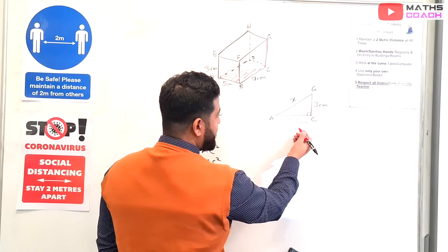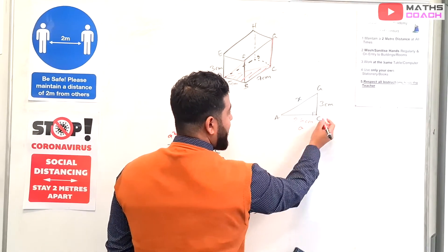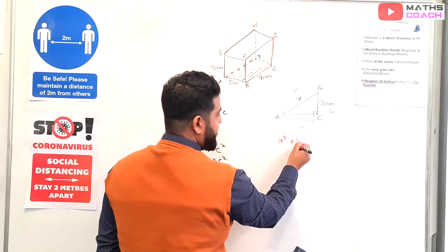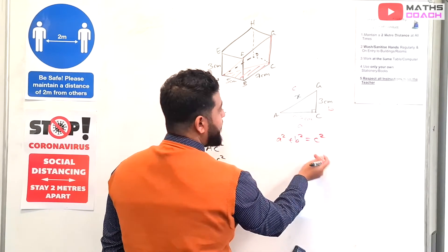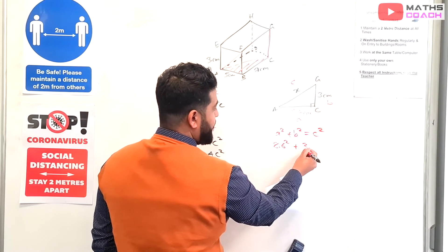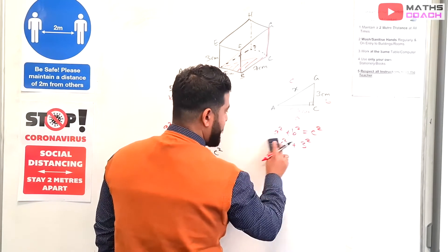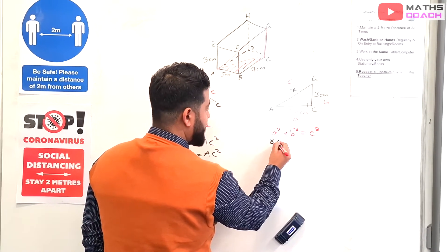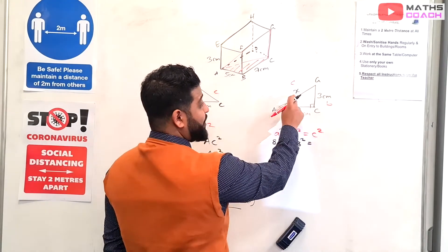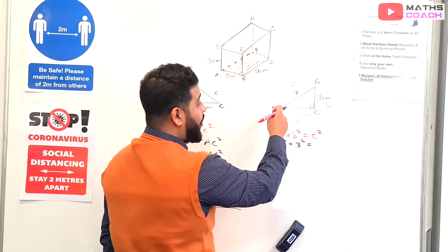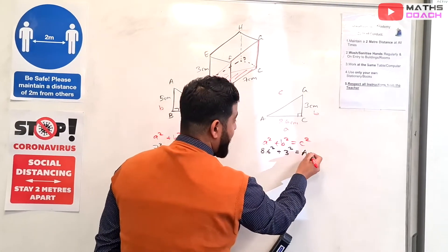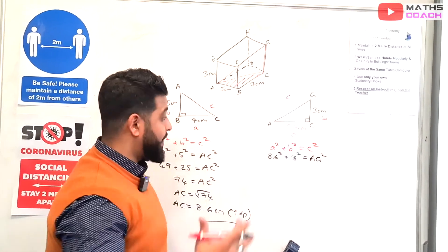Right. So once again, let's apply our Pythagoras to this. We can call this A, we can call this B, and we can call this C. So we have A squared plus B squared equals C squared. And we have A as 8.6 squared plus B as 3 squared. So 8.6 squared plus 3 squared equals—now, once again, you can call it C squared, you can call it X squared if you like, or you can call it AG squared. I think it's probably better to call it AG squared because the question did say find length A to G.